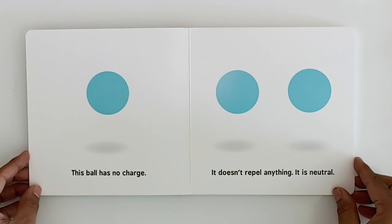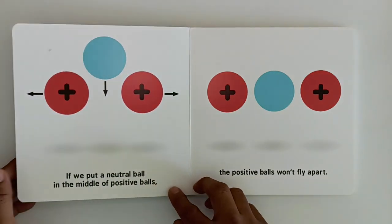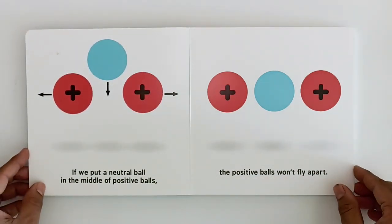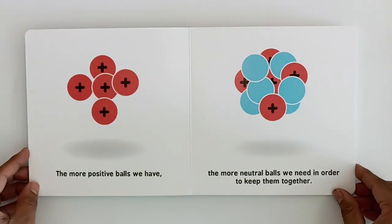This ball has no charge. It doesn't repel anything, it is neutral. If we put a neutral ball in the middle of positive balls, the positive balls won't fly apart. The more positive balls we have, the more neutral balls we need in order to keep them together.